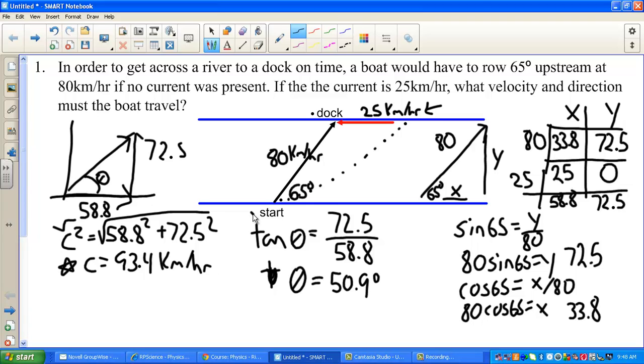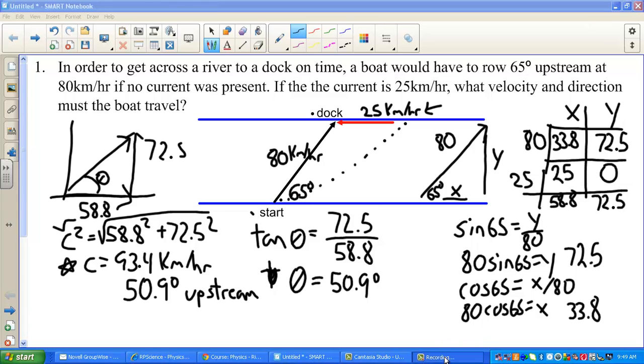So my final answer, 93.4 kilometers per hour, 50.9 degrees. And then I should use a direction. So I will say upstream. And that is how we will do a river problem.